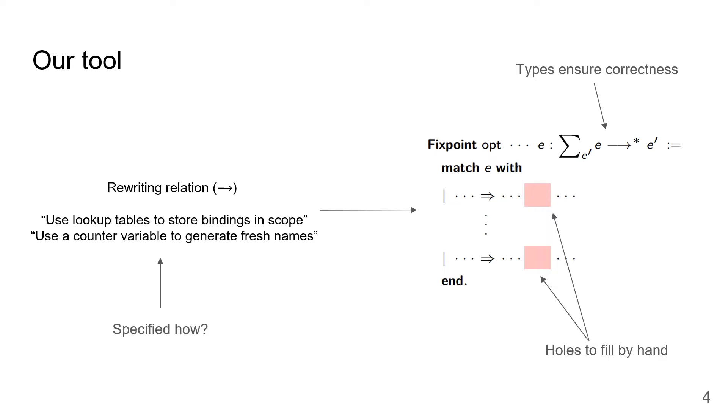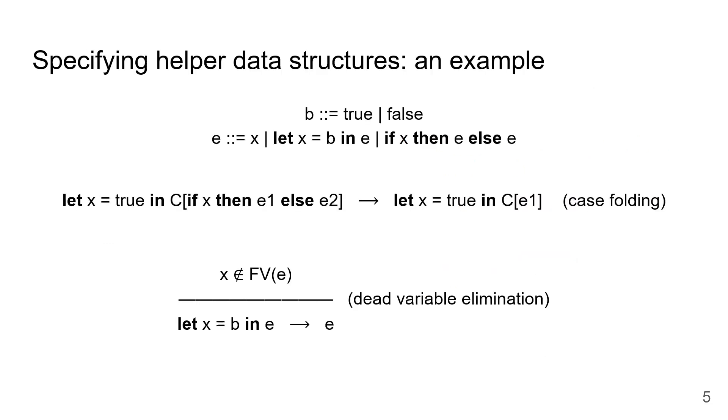In order to build this tool, we had to figure out how to formally specify the various kinds of helper data structures often used by compiler writers in their implementations. And what we found is that a lot of these data structures maintain invariants of a very specific form, which I'll illustrate now with a concrete example. Consider the following toy object language containing let bindings and an if-then-else construct that scrutinizes variables. And suppose we're writing an optimizer that can perform these two transformations: a case folding transformation that folds if-then-else expressions down to the proper branch if we know that the variable being scrutinized is bound to a Boolean literal, and a dead variable elimination transformation that removes let bindings for unused variables.